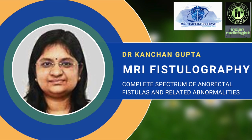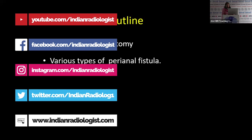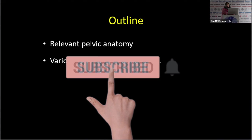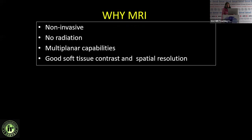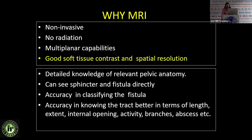The talk is on MRI fistulography. The essence of reporting MRI fistulogram is knowing the pelvic anatomy in great detail and understanding the pathophysiology of how perianal fistulas may behave. MRI is preferred because it gives very good soft tissue contrast and spatial resolution. We can see sphincters and fistulas directly, classify them accurately, know the exact length, extensions, internal opening, whether active or not, any branches or ramifications, and associated abscesses.